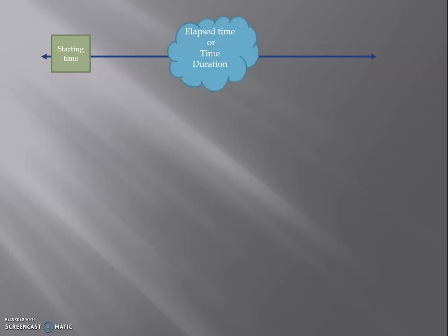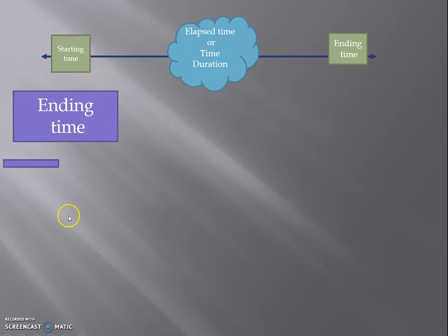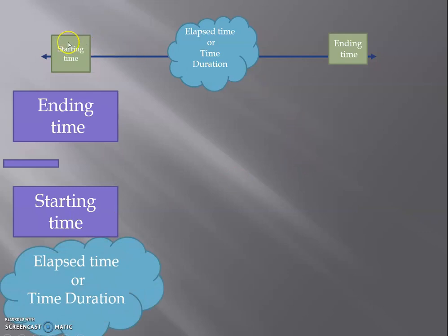Let us practice together. Do you remember this line? Is it a number line or a timeline? Let us see — the labels on the line are: starting time, duration, and ending time. So it is not a number line, it is a timeline. It shows us the starting time for an event, the duration or elapsed time, and the ending time. Ending minus starting equals elapsed time. If we have the starting time plus the duration, we reach the ending time.